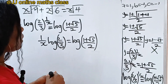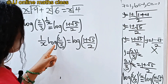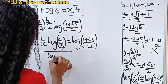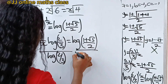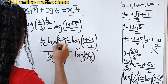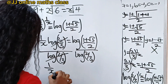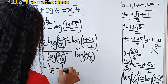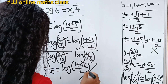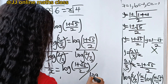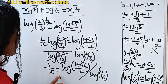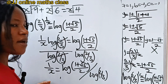Now let's divide both sides of this equation by log of 2 over 3. This will leave us with 1 over x is equal to log of 1 plus root 5 over 2, divided by log of 2 over 3.